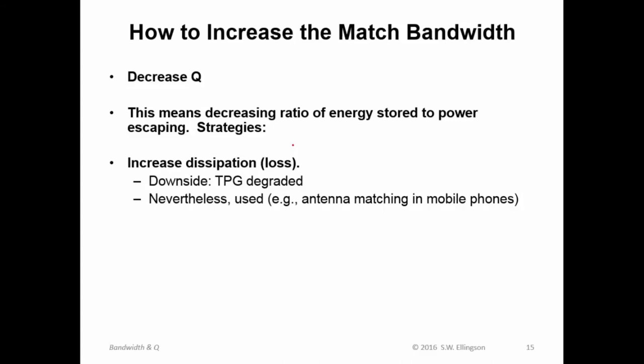One way we can do that is to increase dissipation. That will certainly accomplish it. The downside, of course, is that TPG will be degraded. Typically, we're talking about introducing loss into the 2 port. That will decrease the Q, but the TPG will also be degraded. Now, you might think that that might disqualify this idea immediately in all practical applications, but not true.